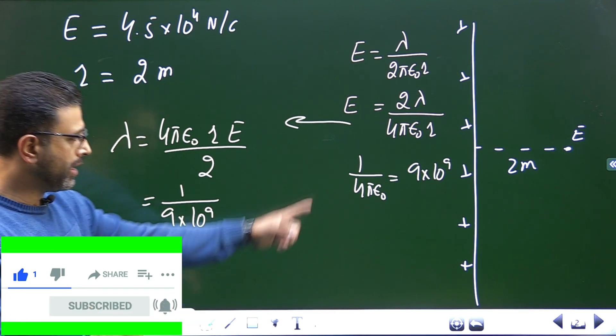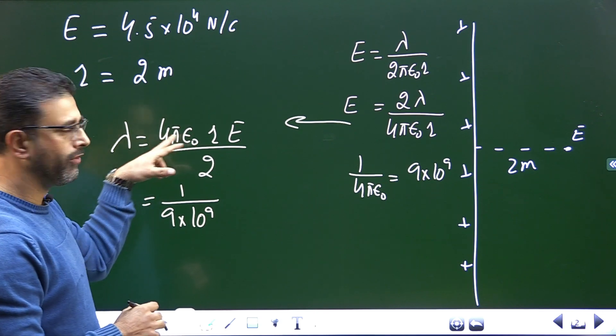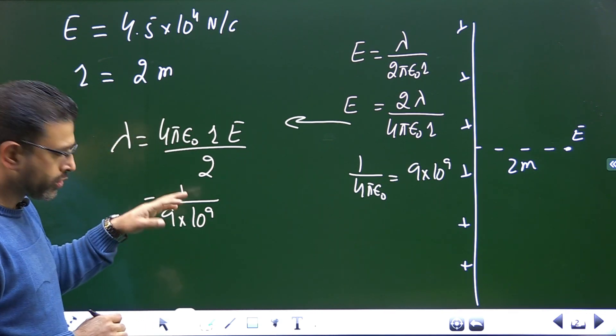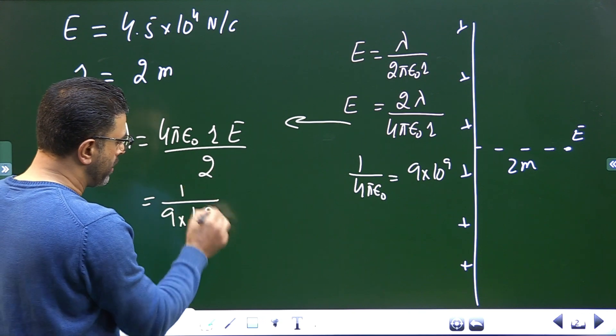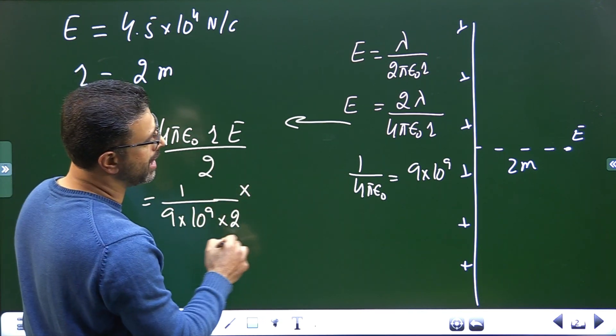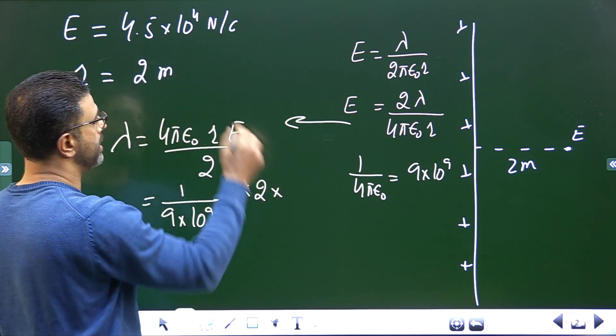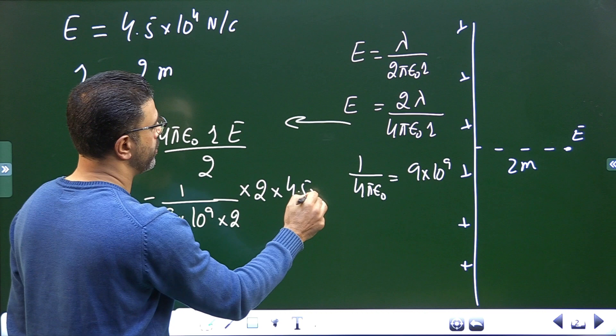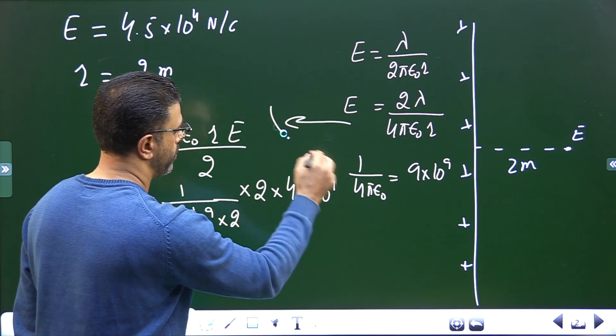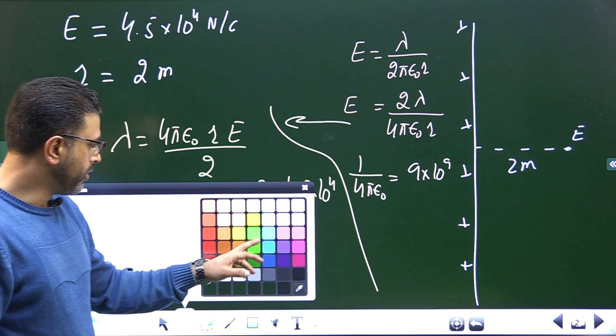So inverse of 4 pi epsilon 0 is 9 into 10 to the power 9, so we have 4 pi epsilon 0 upstairs here, so we'll write 1 by 9 into 10 to the power 9, then we have 2 in the denominator, we have r upstairs, r is given as 2 meters, and field is given as 4.5 into 10 to the power 4.